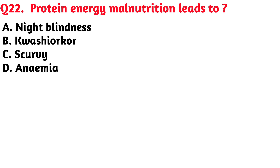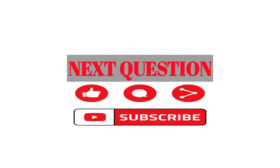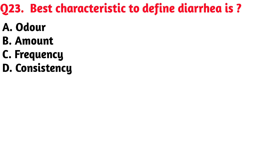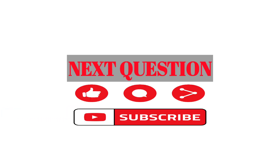Protein energy malnutrition leads to — Option B, Kwashiorkor, is the correct answer. Best characteristic to define diarrhea is — Option C, frequency, is the correct answer.